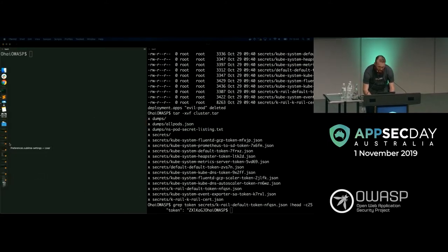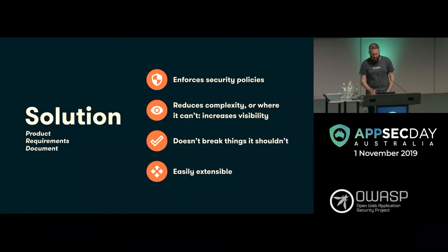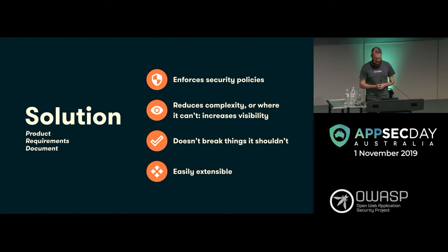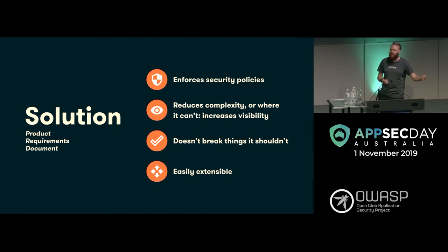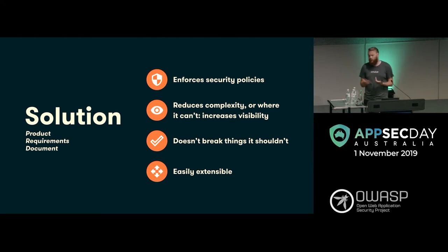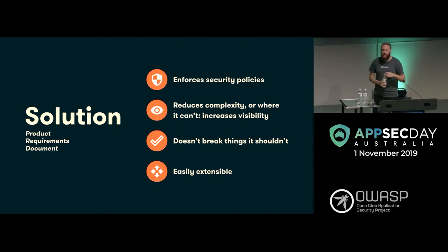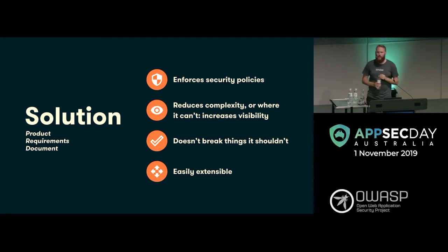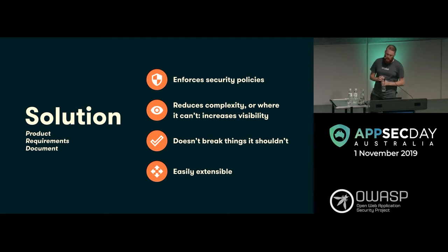Jumping back to the slides — we need a solution to fix this. Easy to do things wrong. How can we improve this? We wanted something that would enforce security policies. We wanted something that would reduce the complexity perceived from developers, and where we can't do that, at least increase the visibility for end users. We don't want to break things that we shouldn't — one of the challenging things for us at Cruise is that we're in a tech race as much as we're in a trust race. We need to move as fast as possible. You don't make friends if you break things. And finally, easily extensible — a lot of team members are developers and we want to set up something easy to consume and hopefully release open source, which we have.